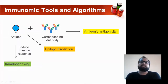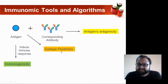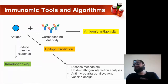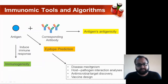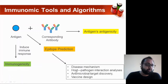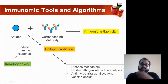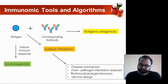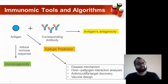If you can come up with something that has all the properties of your antigen, that is the purpose of carrying out epitope prediction. The purposes are: one, to see how disease mechanisms work; two, to understand host-pathogen interaction; three, protein-protein interaction; four, antimicrobial target discovery; and last, vaccine design.